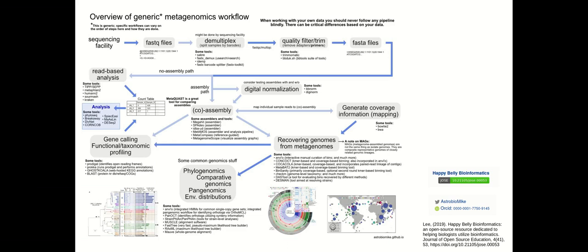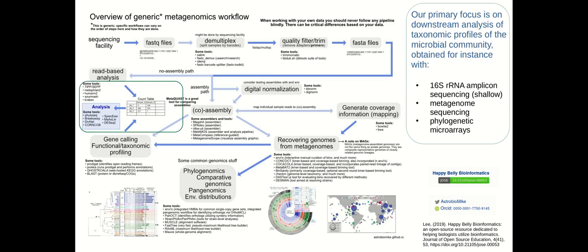Here we are going to primarily focus on the downstream analysis of taxonomic profiling data of the microbial community, and these taxonomic profiles can be obtained also by other means than metagenomic profiling. Other common techniques include 16S rRNA amplicon profiling.